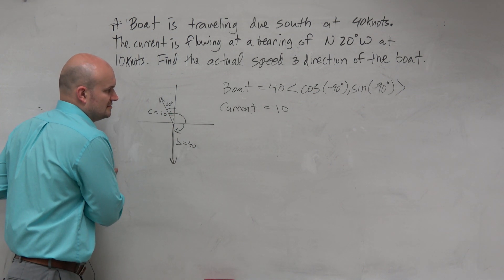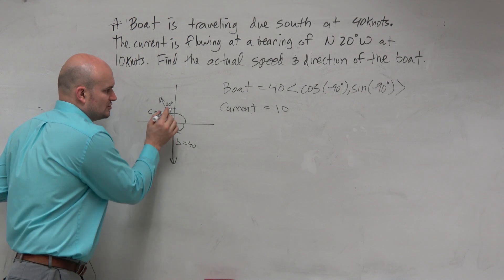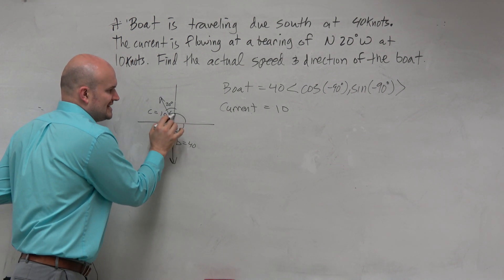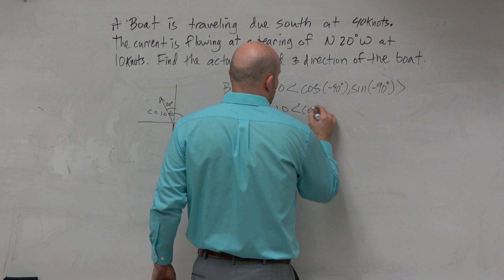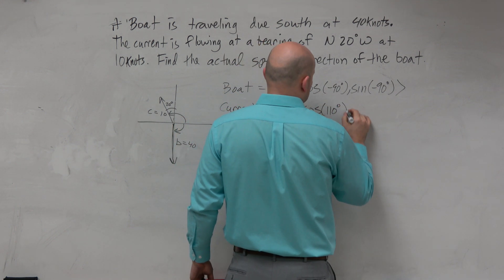So you want to do minus 20. Close. 20 is from here to here. So you're doing 90 plus 20, which would be 110.